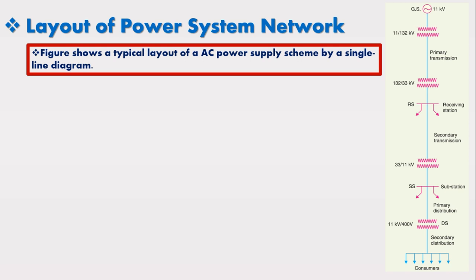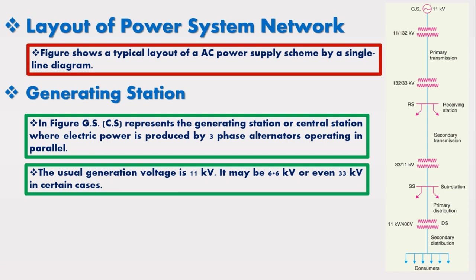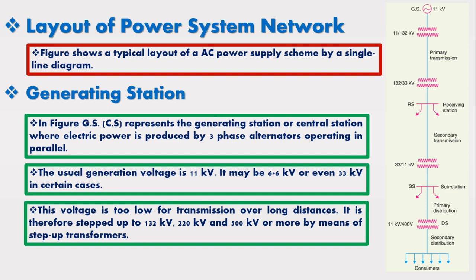First, I am going to discuss generation. In the figure, GS represents the generating station — in some books written as CS for central station — where electric power is produced by three-phase alternators operating in parallel. The usual generation voltage is 11 kV; it may be 6.6 kV or even 33 kV in certain cases. This voltage is too low for transmission over long distances, so it is stepped up to 132 kV, 220 kV, 500 kV or even more by means of a step-up transformer.